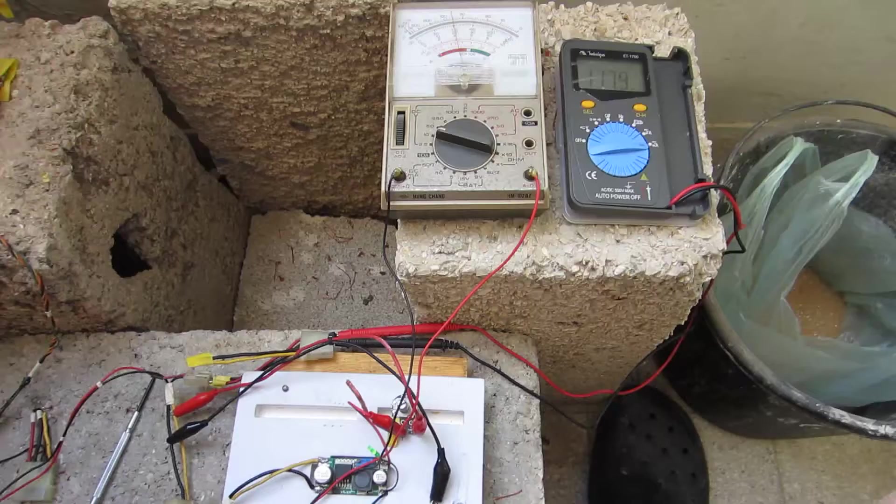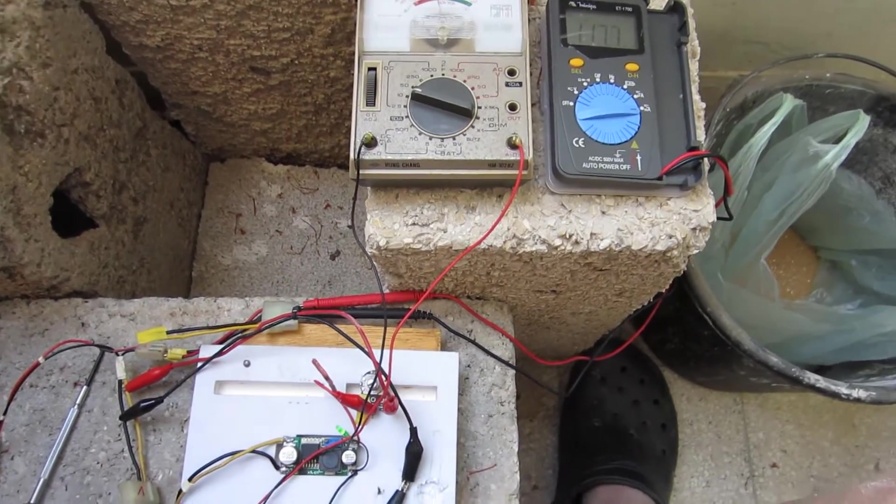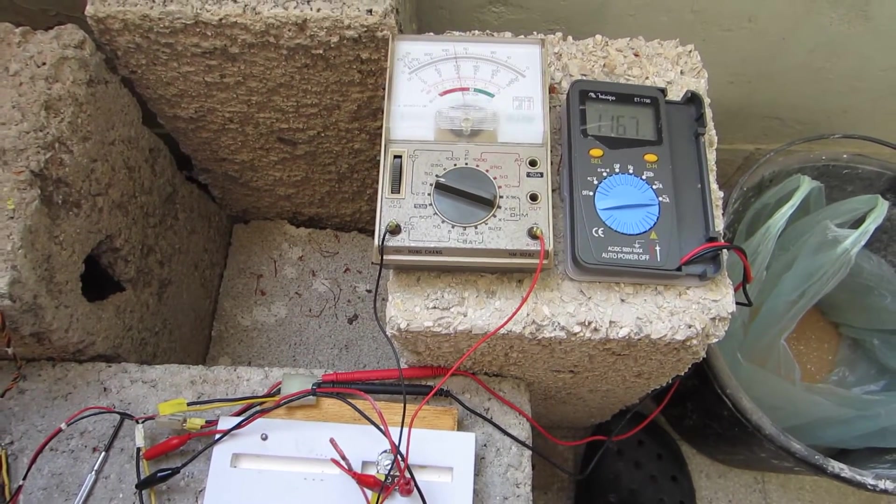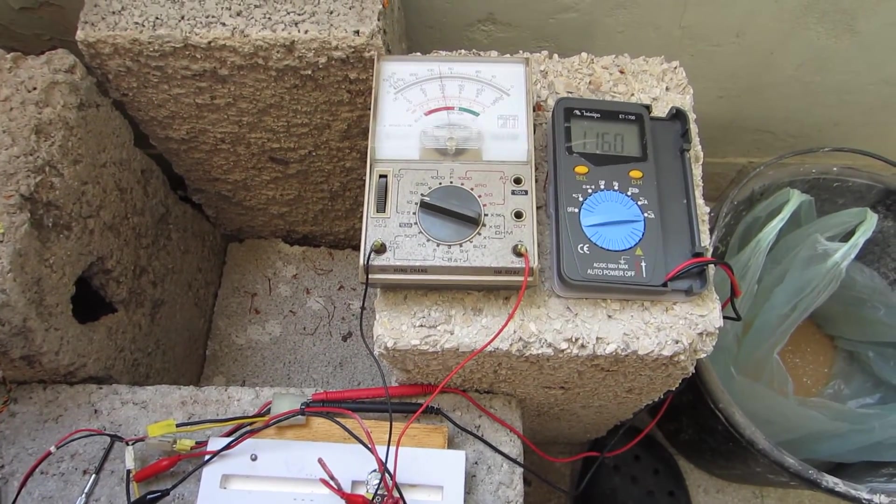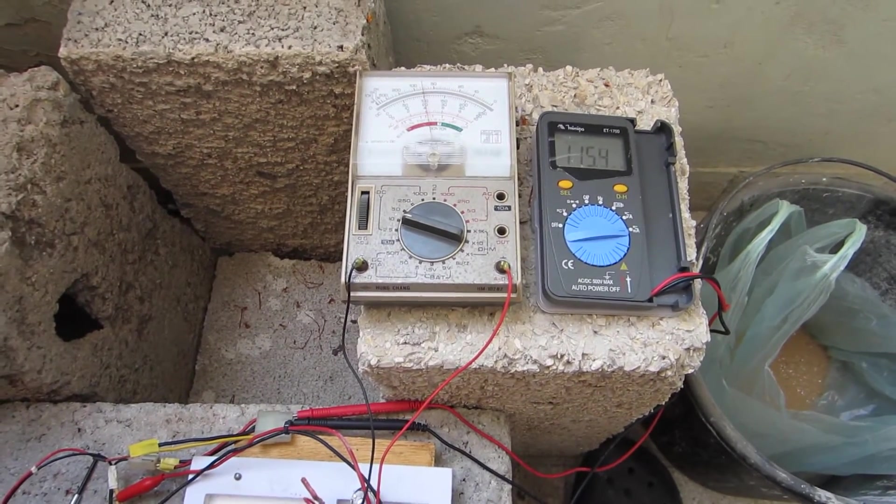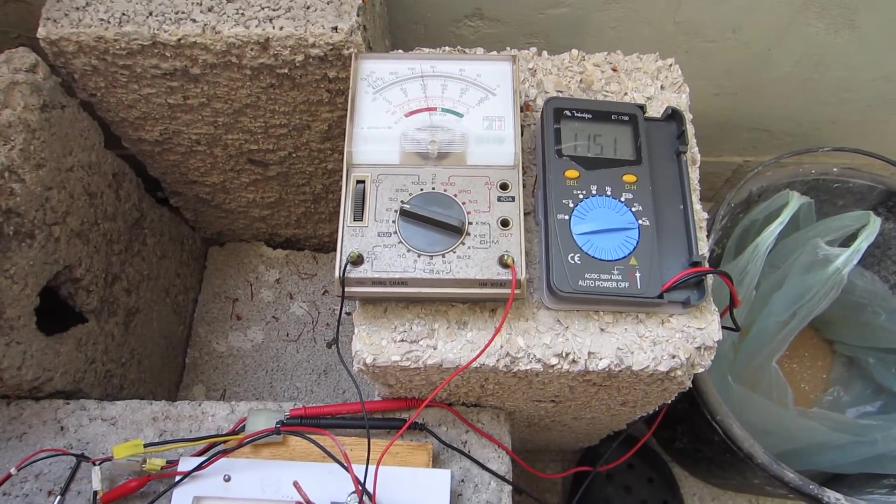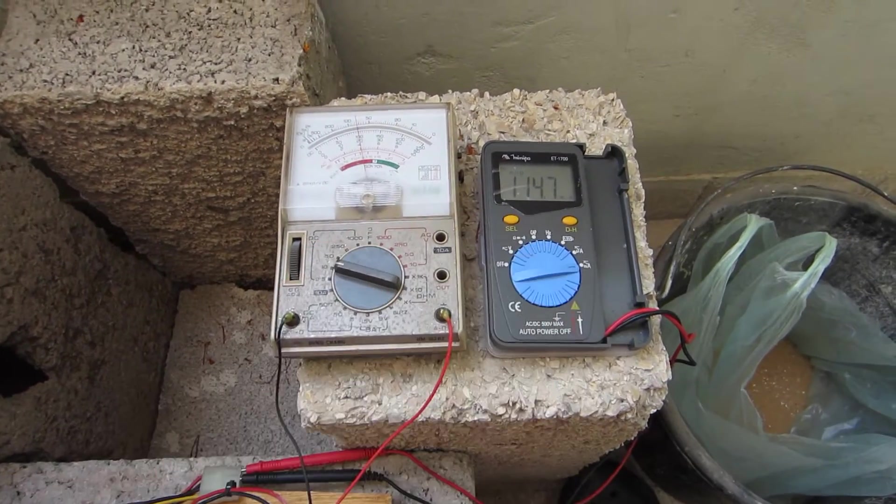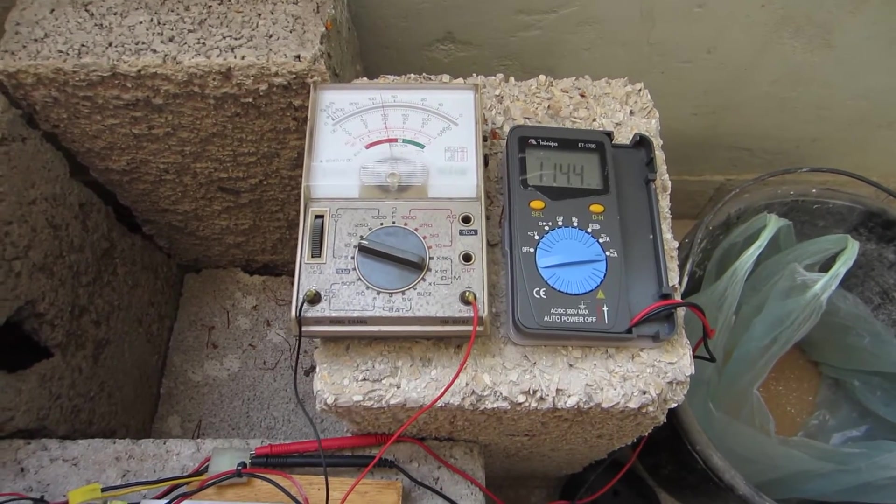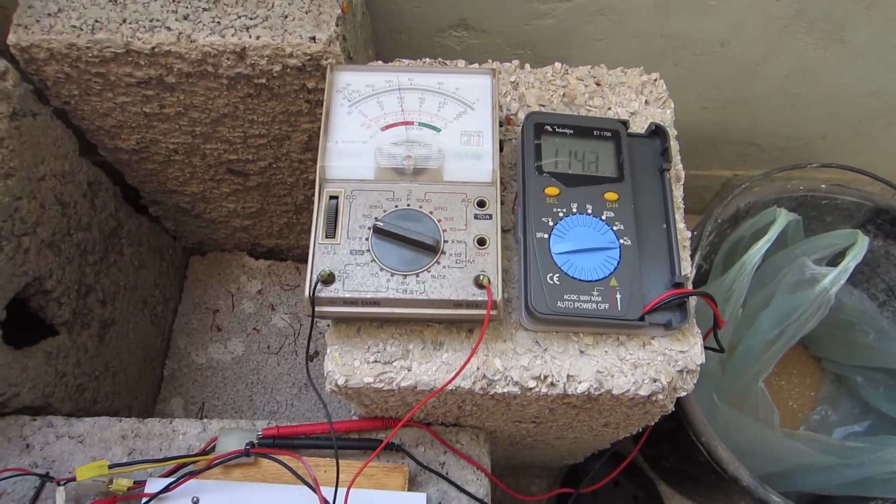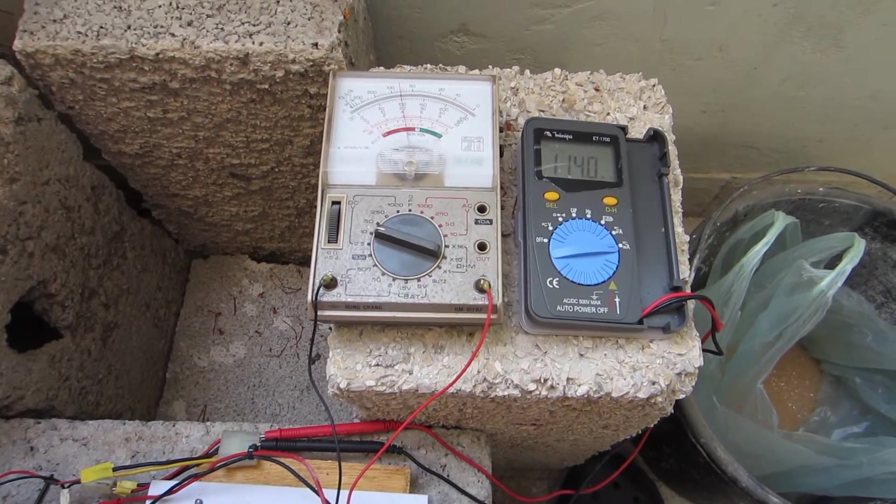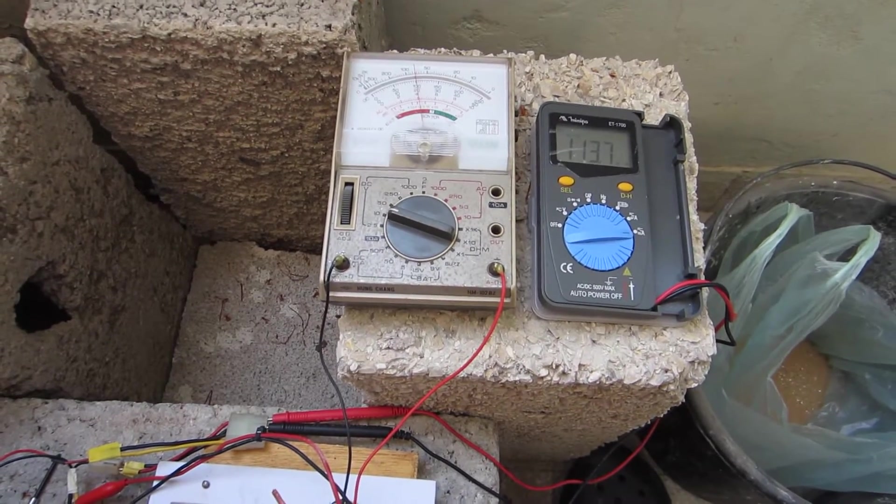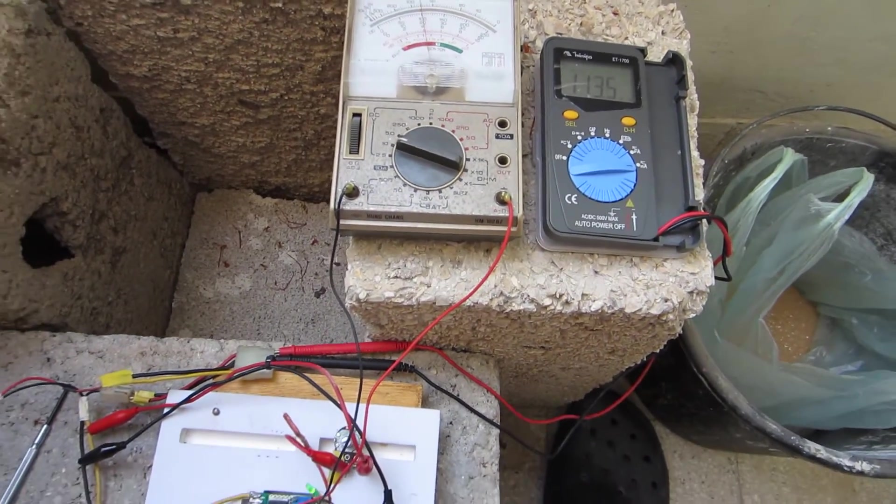I started charging the second cell, which was measured at 1.2 volts or something. The current started at about 170 milliamps and dropped in about 30 minutes to 115 and still dropping.